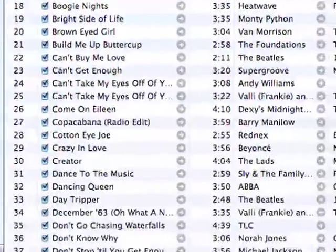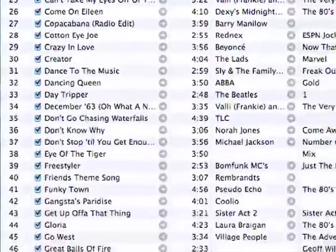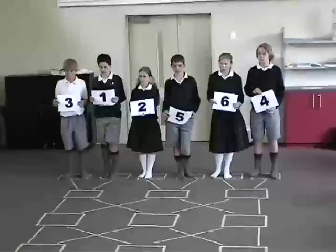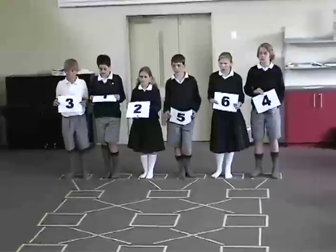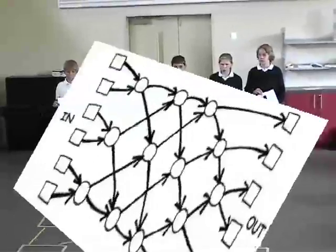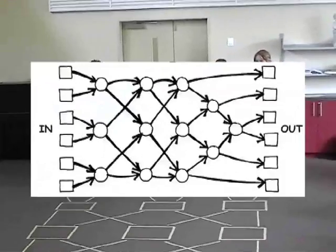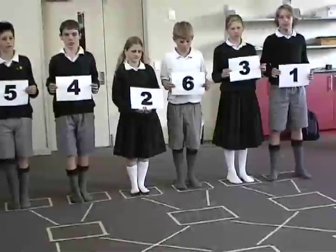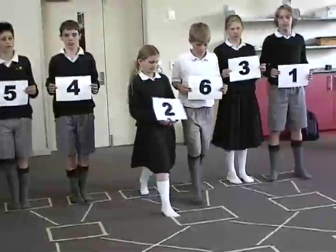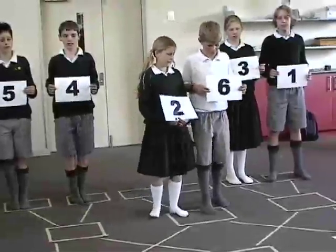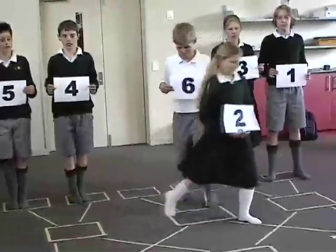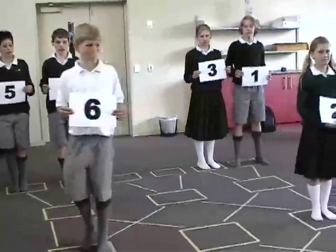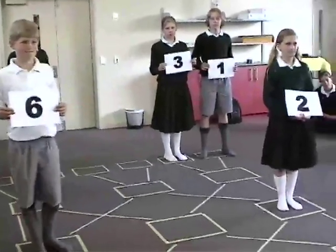Today we're going to look at a clever way of doing the sorting quickly. We're going to sort these six numbers into order using the pattern on the floor. The trick is to follow the lines on the floor until you meet someone at a box. You compare your number with the other person and the smaller number goes to the left while the larger one goes to the right.